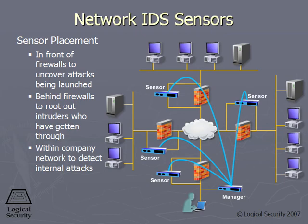Some companies decide to put a sensor outside their firewall. Why would they do that? They would put a sensor outside their firewall basically to see who's knocking — what type of things are hitting and not necessarily getting through — but when you put it outside your firewall, you're gathering a lot of data to maybe predict some type of attack that could take place.